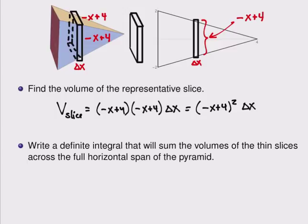Now that we know the volume of one of these slices, we want to imagine adding up the volumes of all of the slices from the bottom of the pyramid all the way up to the top. So next we're going to write a definite integral that sums up the volumes of all of those thin slices across the full horizontal span of the pyramid.